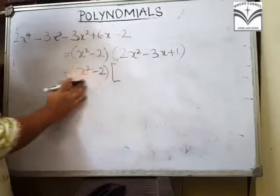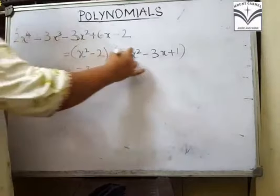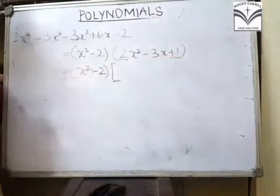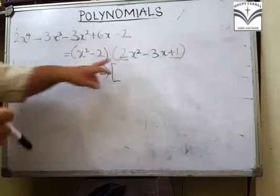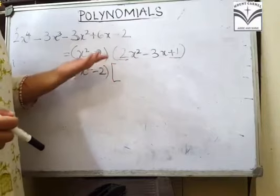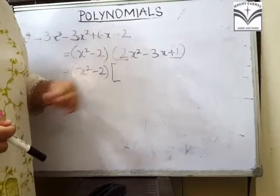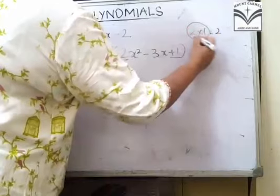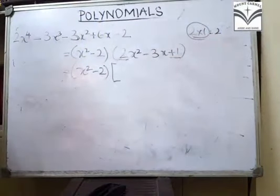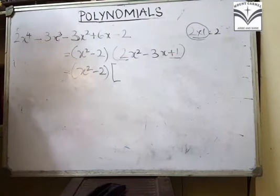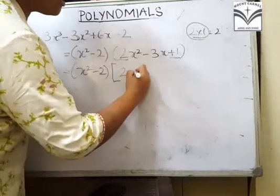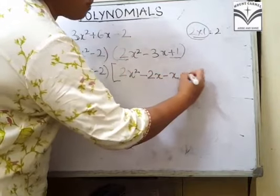Isko aise hi likhenge. Ab 2x² - 3x + 1 ko split karenge. x² ka coefficient 2 hai aur constant term 1 hai, so 2 × 1 = 2. 2 ke factors hain 1 aur 2 — in dono ko add karne se aapko 3 milega. Addition chahiye to dono ka sign same hona chahiye. Yahan par sign minus hai, isliye dono mein minus: 2x² - 2x - x + 1.